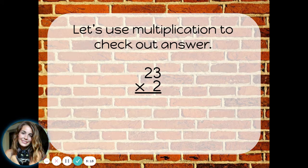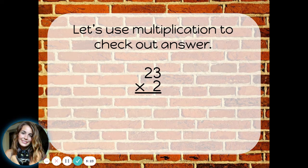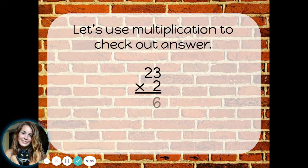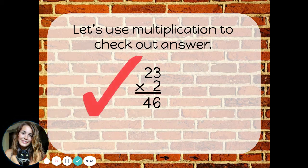Let's use multiplication to check our answer. Division is just the opposite of multiplication. If I take my answer, 23, and multiply it times my divisor, 2, I should get my dividend, which was 46. If I do, then I know I have the correct answer. 2 times 3 is 6, and 2 times 2 is 4. I got my dividend — that means 23 was the correct answer to that division problem.